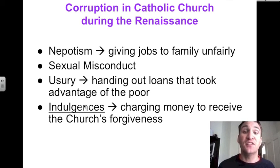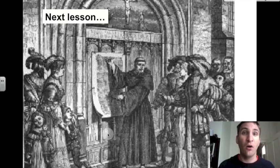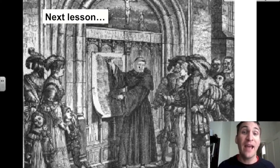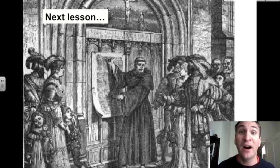Please answer those summary questions now on page number five. Next lesson preview: this man, a German monk named Martin Luther, wrote a list of complaints about the Catholic Church and then publicized them for all to see and read and respond to. Until then, this is Mr. Deegan signing off.